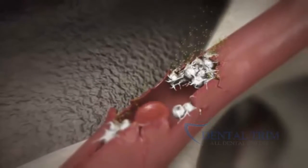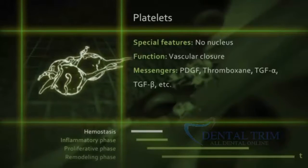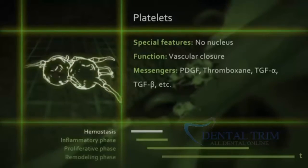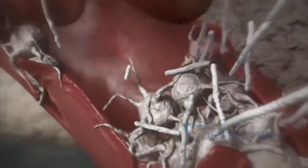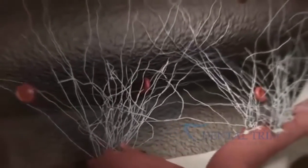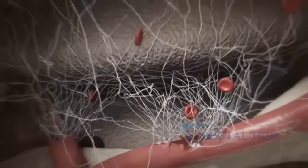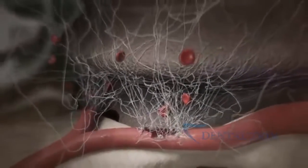Platelets release various messenger substances for cell-to-cell communication, such as thromboxane — which promotes platelet aggregation — and PDGF (platelet-derived growth factor), which stimulates the cell division of fibroblasts. Fibrin monomers spontaneously cross-link, forming a fibrin network. The blood clot permeates the wound space, forming a provisional matrix that also adheres to the implant surface.